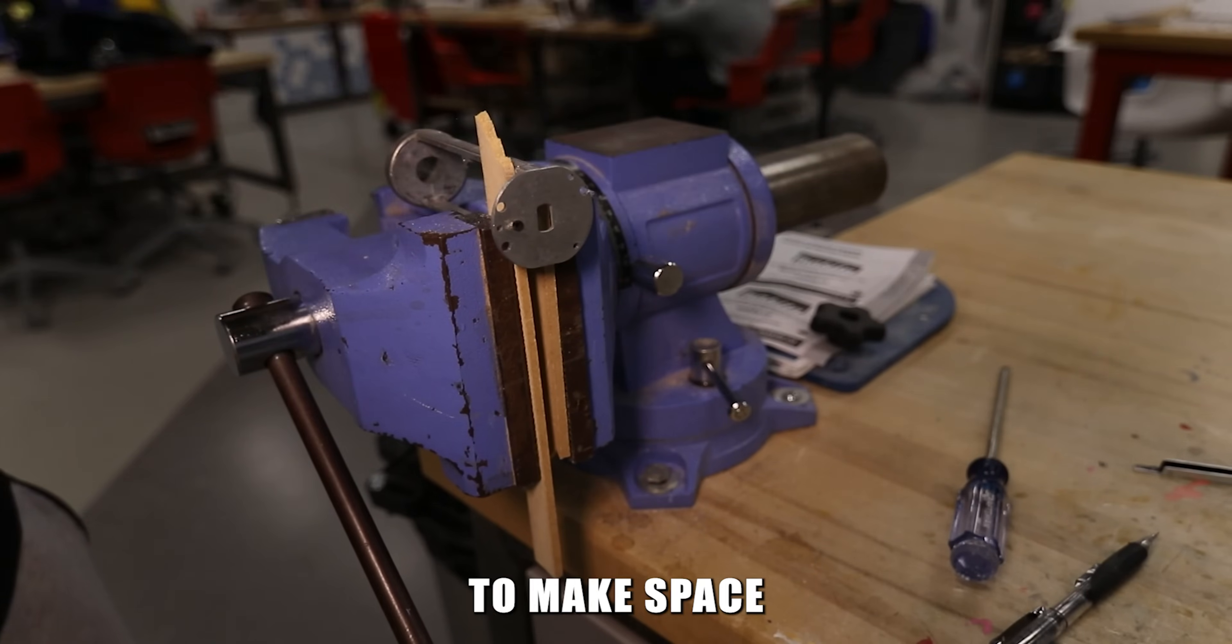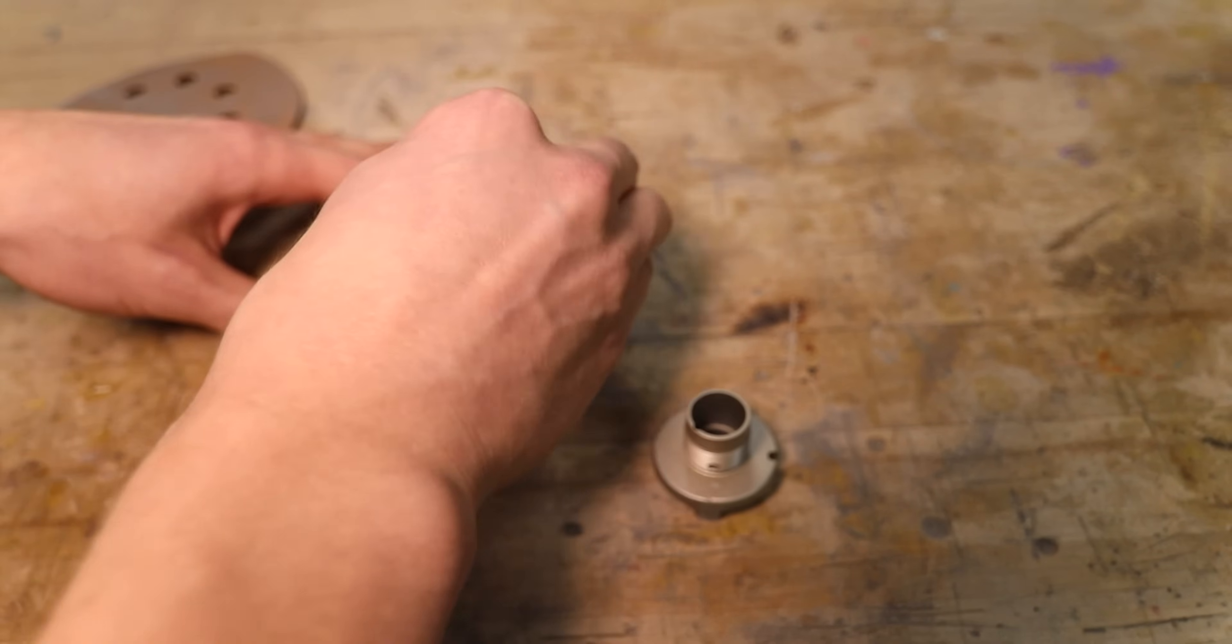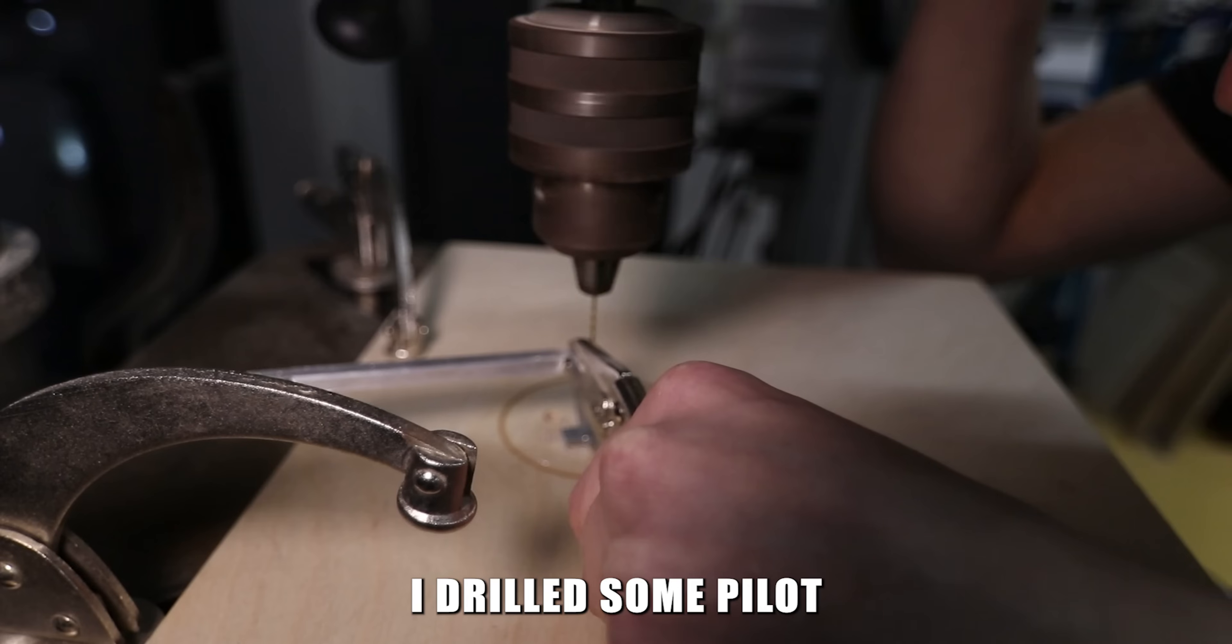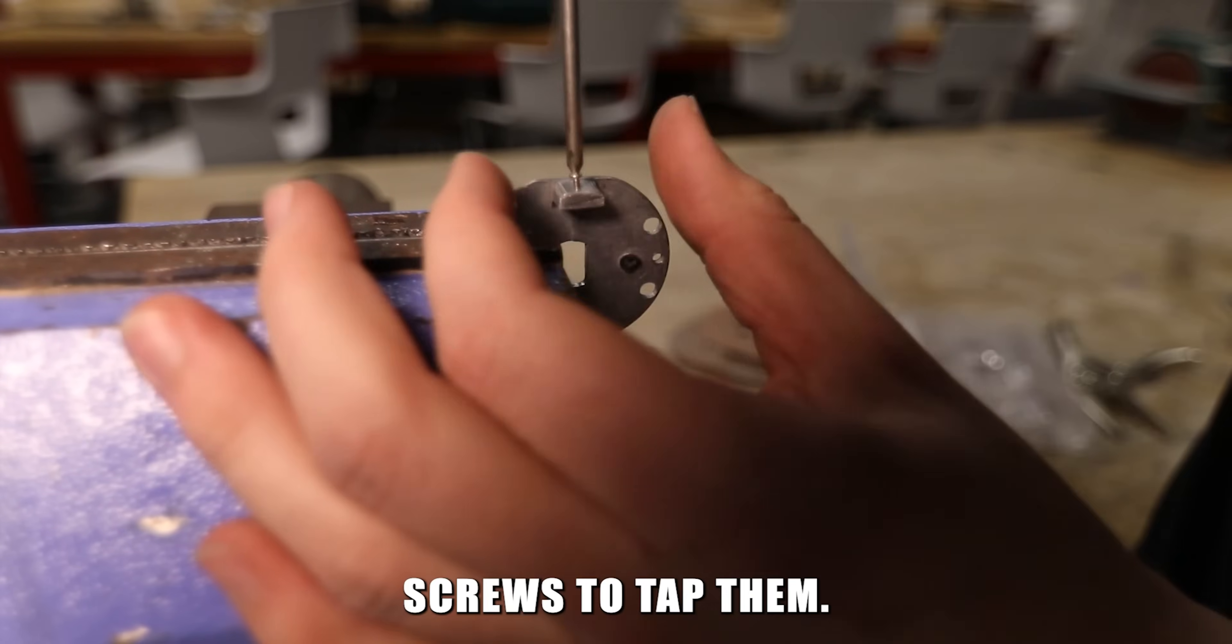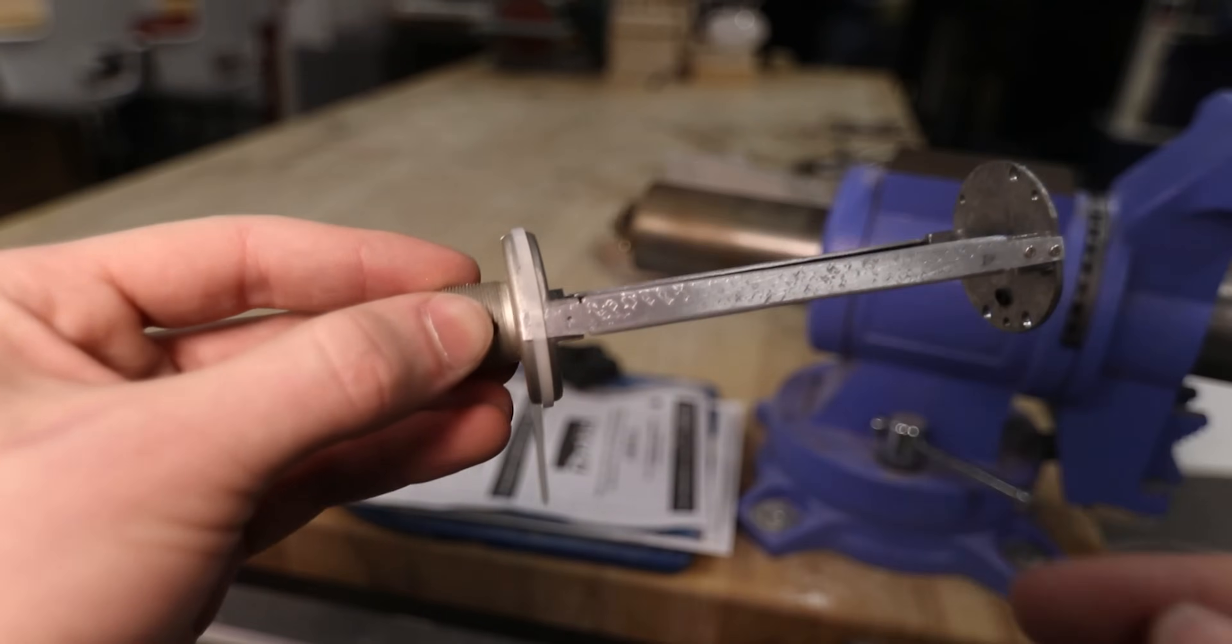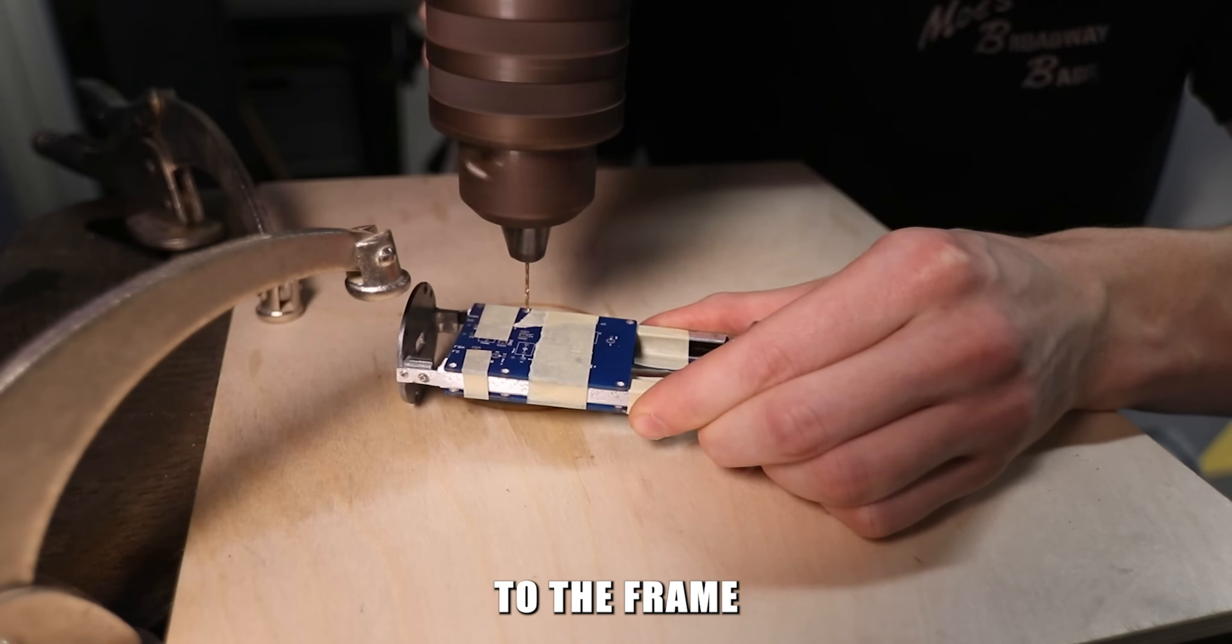Then I cut the old frame to make space for the new aluminum rails. I drilled some pilot holes in the frame and used some really small steel screws to tap them. Then I drilled the holes to mount the PCBs to the frame.